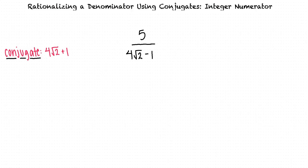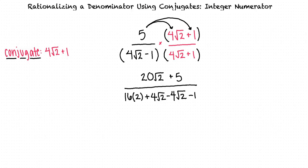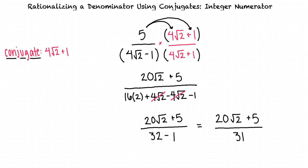Knowing this, we can multiply the expression by (4√2 + 1)/(4√2 + 1). We can distribute the numerator and multiply the two denominators together. When we simplify, we obtain a final result of (20√2 + 5)/31.